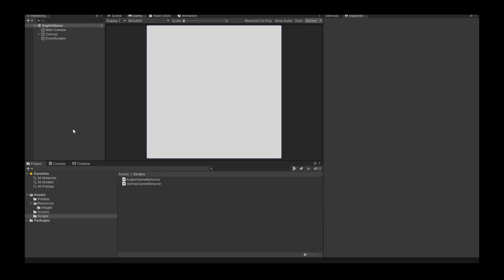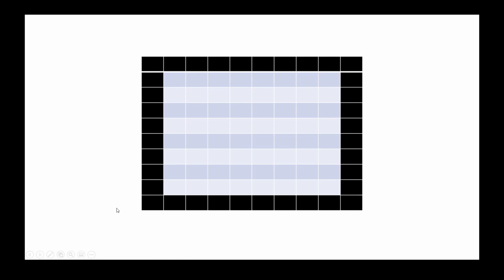Now we can load our images and the next step is to design the game field. For that we separate the panel into a grid. The border or the grids outside of the panel will be black, and inside these panels the snake can move. The snake can only move vertical or horizontal.